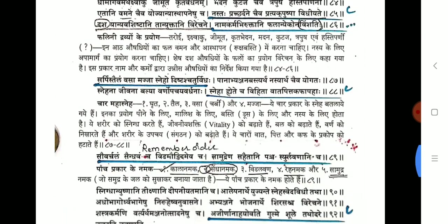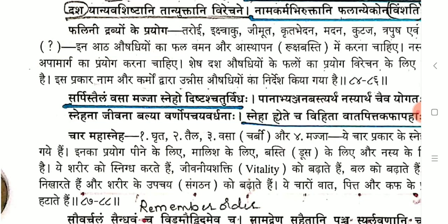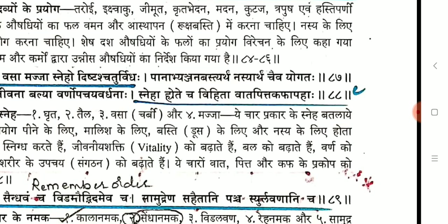Mahasneha — there are four types: Sarpi, Taila, Vasa, Majja. The count is less than 10, so order and name are both important. Also important is context: in which chapter this Shloka appears, because Sneha Nadaya and Sneha Varga chapters also discuss Sneha dravyas. Remember this Shloka is from this chapter. Sneha is Vata-Pitta-Kaphahara.